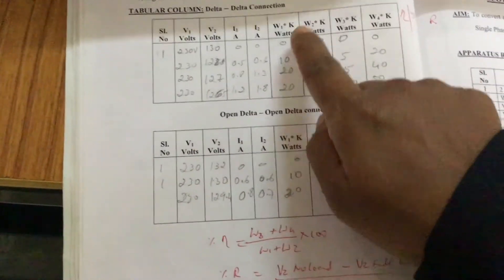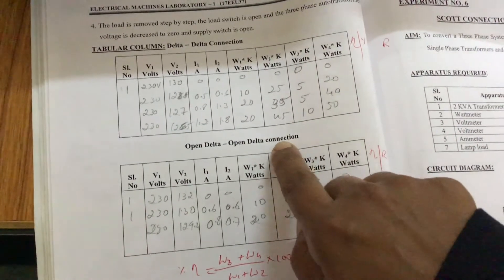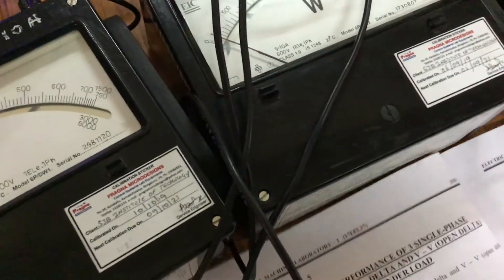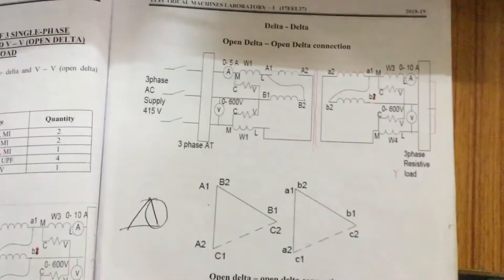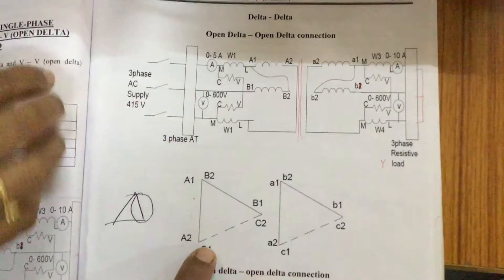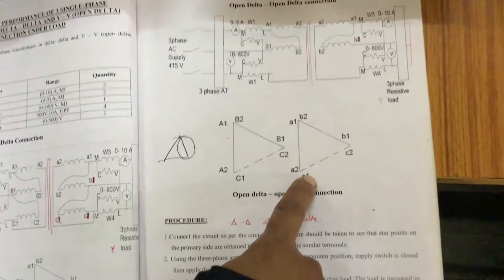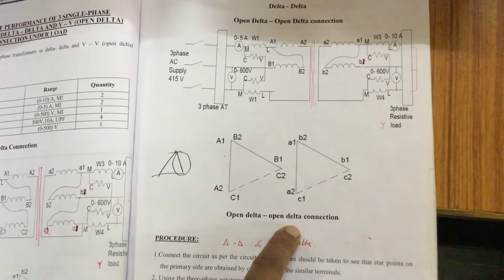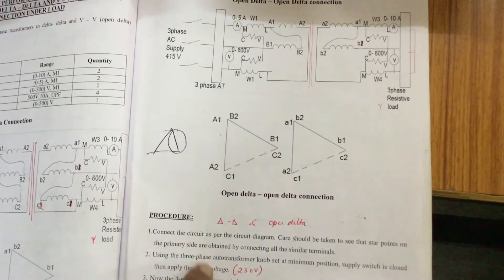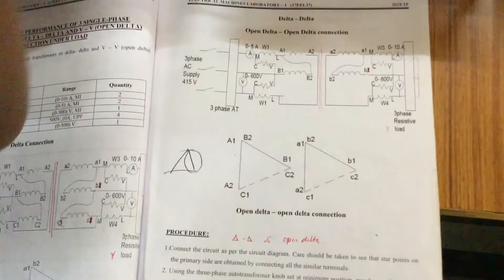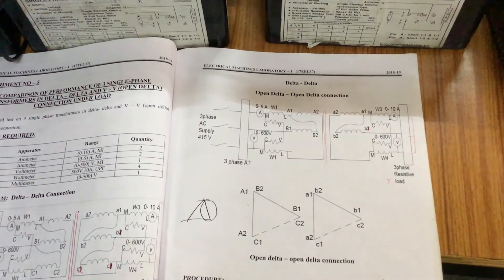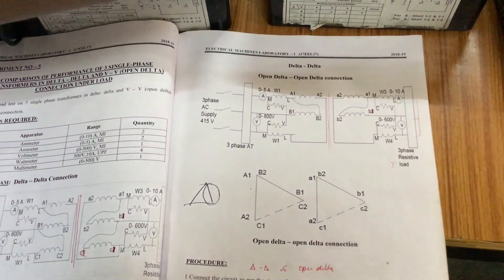Now this is for delta-delta connection. We will check what happens with open delta. For open delta, the last terminals — C1 and C2 on both primary and secondary — are left open, so this becomes open delta or VV connection. The same procedure used for delta connection is then followed for open delta, and we analyze the performance by taking and comparing the data.